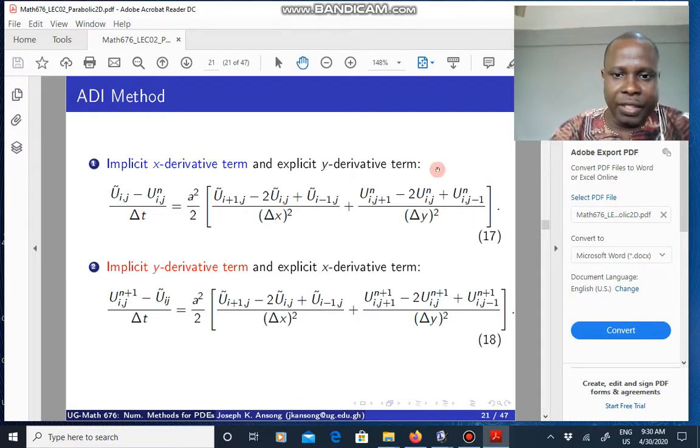Now, because this is known, this term is basically very similar to the 1D case for the implicit 1D approach. And we know that the resulting system of equations are tridiagonal. And so that is why this approach is powerful, in the sense that the resulting matrix for this first step would be a tridiagonal matrix that you can solve. But you are solving it for U tilde, which is not the actual solution.